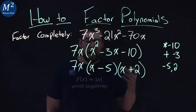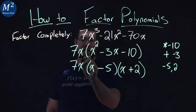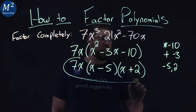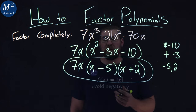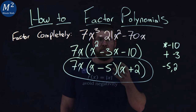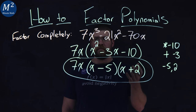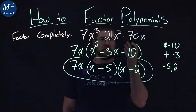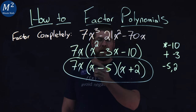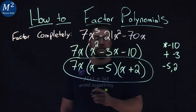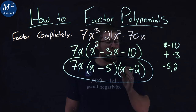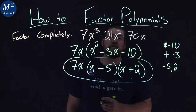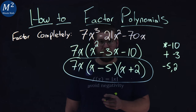At this point, I don't see anything else I can do to factor this polynomial, and so there we have it. We factor completely our polynomial and got 7x times x minus 5 times x plus 2.